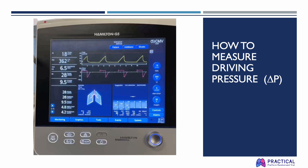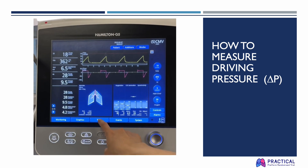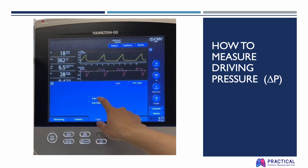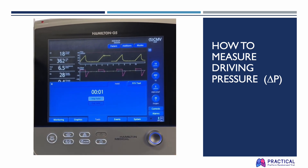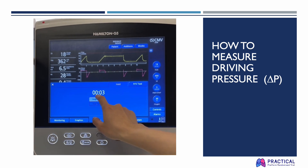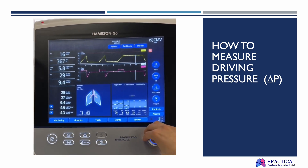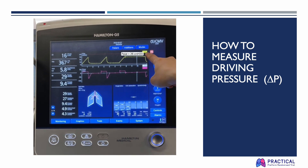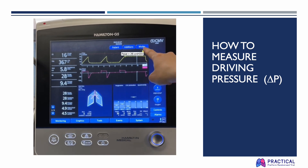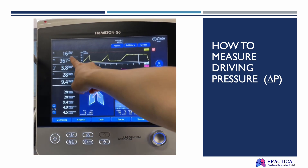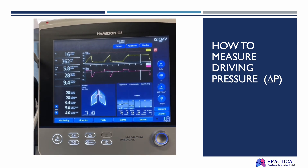This video shows how to perform inspiratory and expiratory occlusion maneuvers on the G5 to get plateau pressure and total PEEP. To measure plateau pressure, go to Tools and then press Inspiratory Hold. Wait 3 seconds and look for a straight line on the pressure-time waveform to determine your plateau pressure and volume during this maneuver, as you will need these values to calculate ERS.